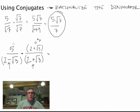And now when I make a distribution, I'm going to do 5 times 2, I get 10, and then plus 5 root 3. So far so good.